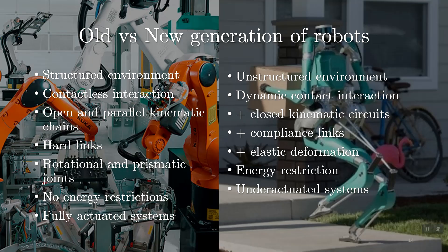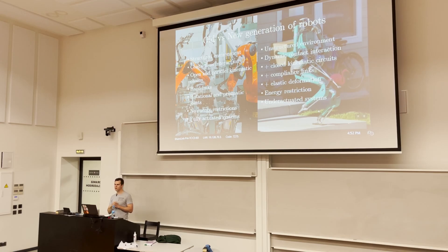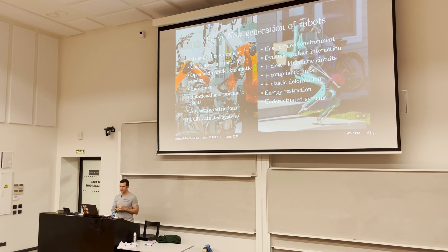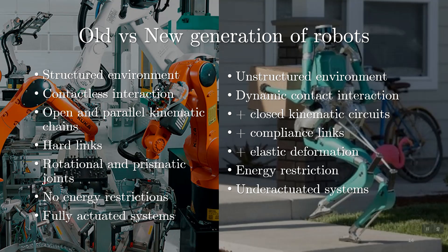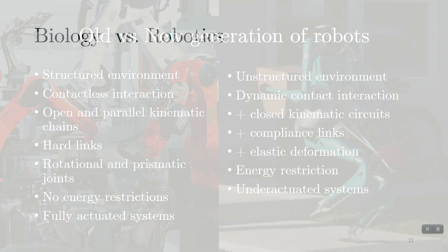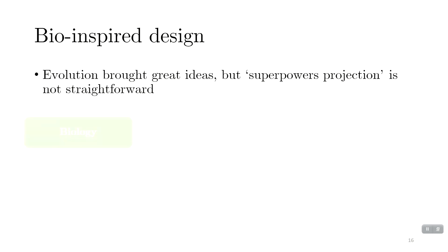For example, robot Atlas has around 36 degrees of freedom but only 32 actuators, making it a highly under-actuated system. Designing such a system is not a trivial task. The way to approach it is through simulation plus optimization.